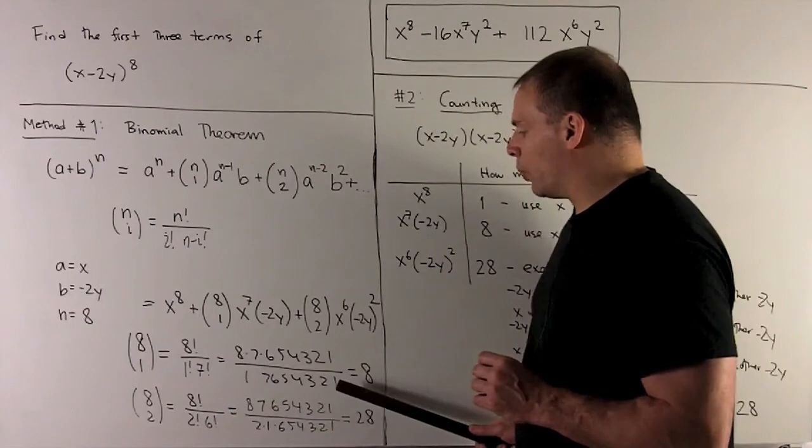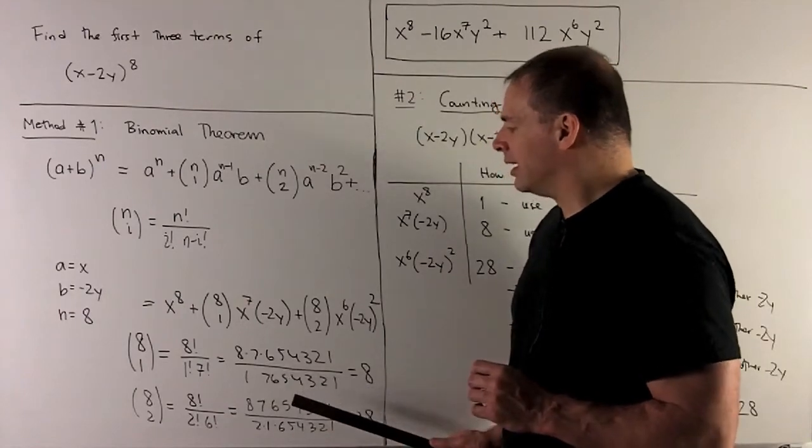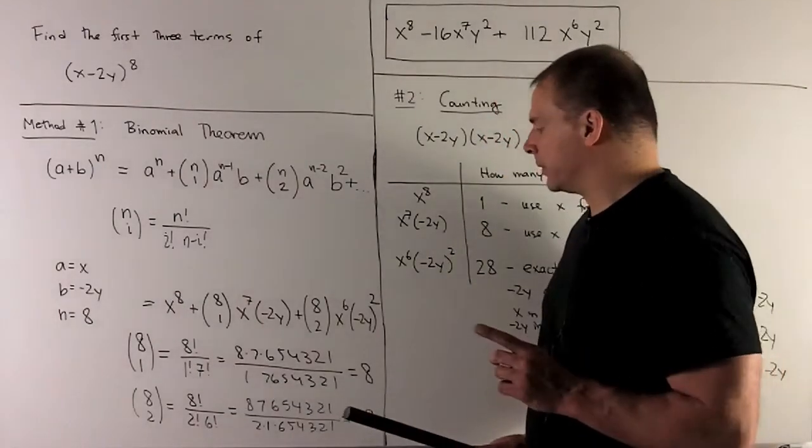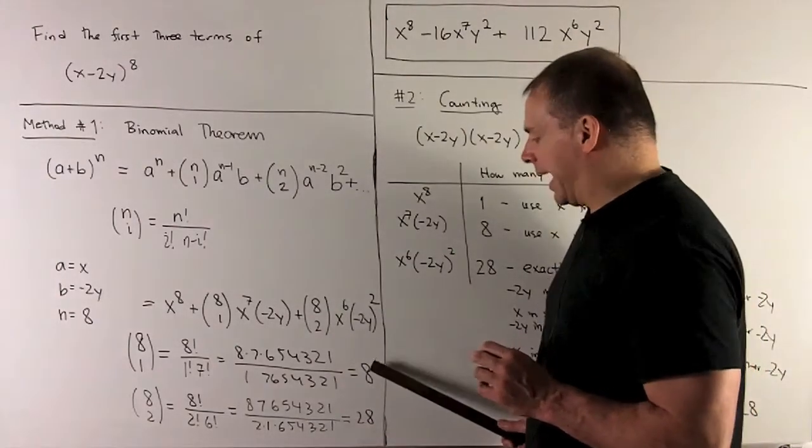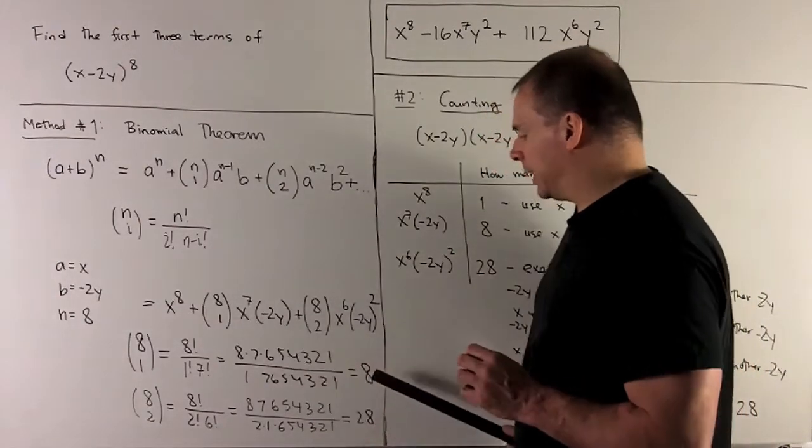7 factorial is 1, 2, 3, 4, up to 7. And then 1 factorial is just 1 itself. I cancel, we get an 8. So, 8 choose 1 is going to be 8.